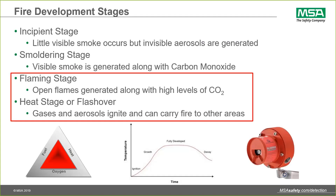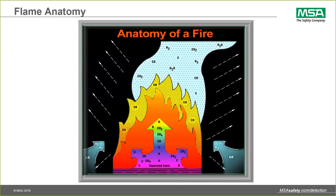The next slide shows the anatomy of a flame. The point of this slide is really to talk about the fact that the chemistry of the material burning results in a unique spectral signature. This shows some of the ultraviolet light at the root of the flame, more of the infrared energy, the yellow flickering at the edges of the flame, and in the plume of the fire you have these different chemicals that are a function of the material being oxidized.